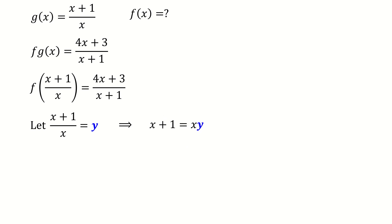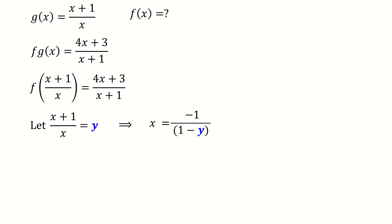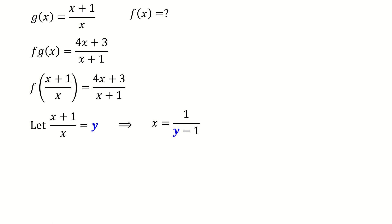First, we multiply both sides by x to get xy = x+1, then rearrange and factorize to get x(1−y) = −1. Dividing both sides by (1−y) gives x = −1/(1−y), which simplifies to x = 1/(y−1).